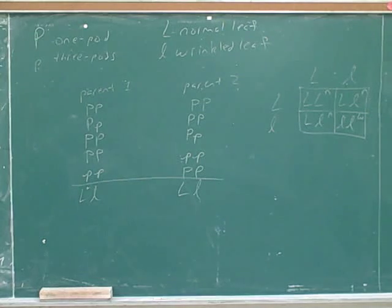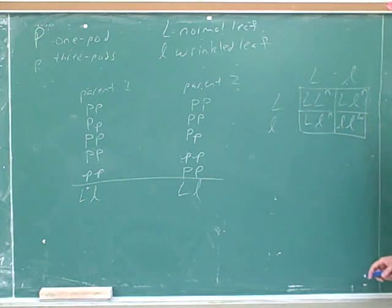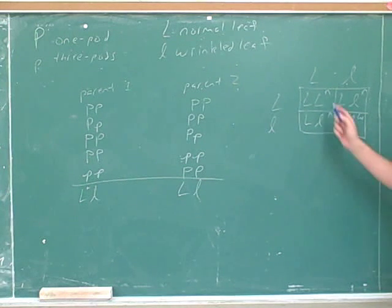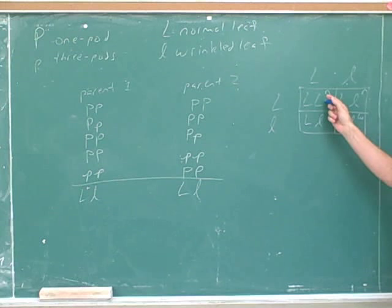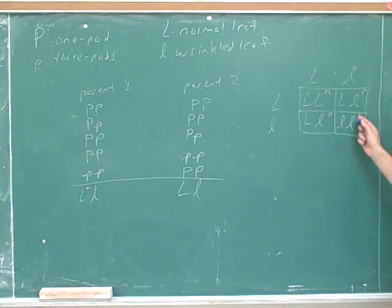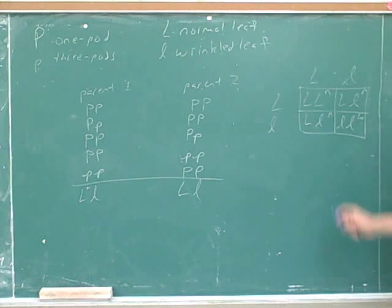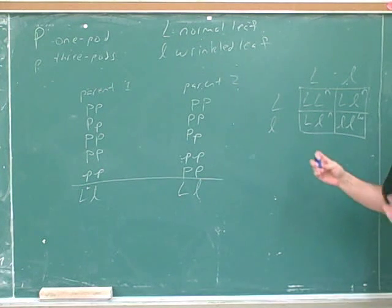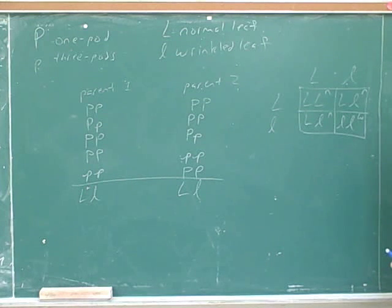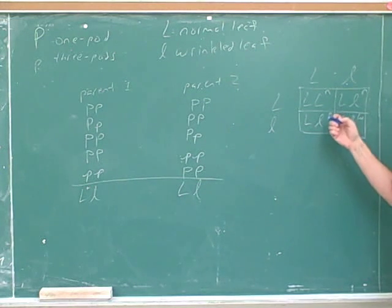So all the Punnett square tells us is that every time we mate two heterozygotes, there is a 75% chance of getting the normal phenotype and a 25% chance of getting the wrinkled phenotype. That means if you have lots and lots of offspring, that almost exactly 75% of them will be normal and almost exactly 25% of them will be wrinkled. But most of the time, you're not going to have millions of offspring.